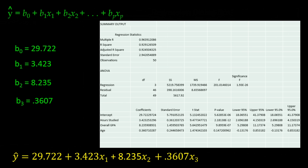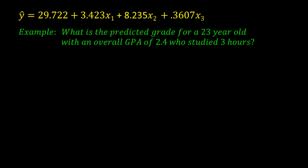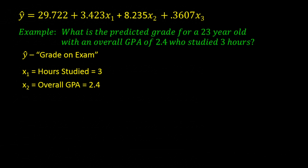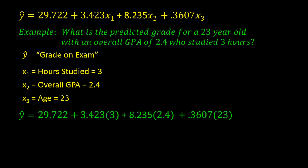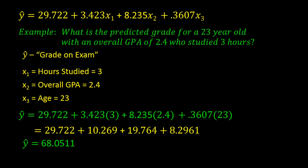Now let's take a look at how we would use this y-hat line. Suppose we have a 23-year-old with a GPA of 2.4 who studied for 3 hours. What would his predicted grade on the exam be? Y-hat will be the predicted grade on the exam. x1 is the number of hours studied, so that would be 3. x2 is the overall grade point average, so that would be 2.5. And x3 is age, so that would be 23. Plugging all numbers into the y-hat formula gives us a y-hat value of 68.0511.